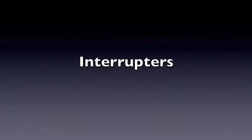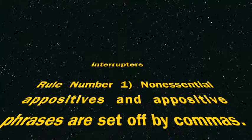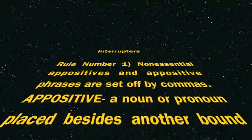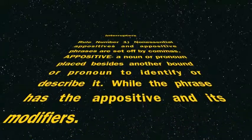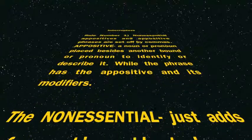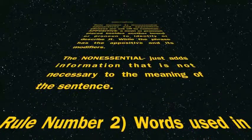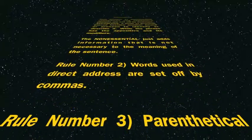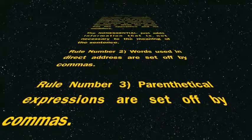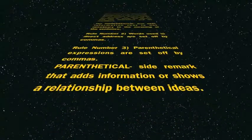I am going to show you how interrupters work. Interrupters have a few rules. Rule Number 1: All non-essential appositives and appositive phrases are set off by commas. An appositive is a noun or pronoun placed beside another noun or pronoun to identify or describe it, while a phrase has an appositive and its modifiers. The non-essential just adds information that is not really necessary to the meaning of the sentence. Rule Number 2: Words used in direct address are set off by commas. Rule Number 3: Parenthetical expressions are set off by commas. A parenthetical expression is a side remark that adds information or shows a relationship between ideas.